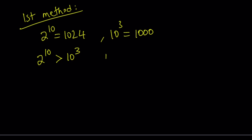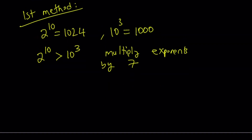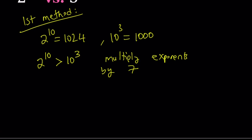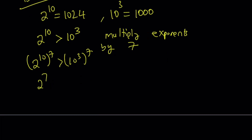So here's what we're going to do: multiply exponents by 7. The motivation behind that is, if I do that, I'm going to get 2 to the power 70 on the left-hand side, and something else on the right-hand side. So we're raising both sides to the 7th power. This gives us 2 to the power 70 is greater than 10 to the power 21.